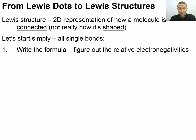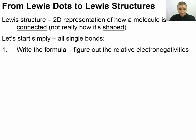If you don't have the electronegativities in front of you, that's fine. You know fluorine is the super electronegative one, carbon is middle of the road, and hydrogen is about the same. As you go down the periodic table electronegativity decreases, and as you go to the left-hand side it also drops. The upper right is high electronegativity, so most of the time you can figure out relative electronegativity just by looking at the periodic table.